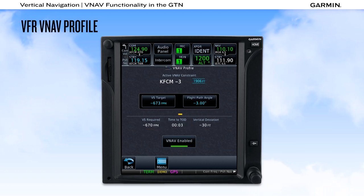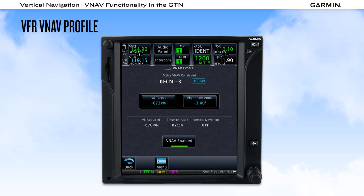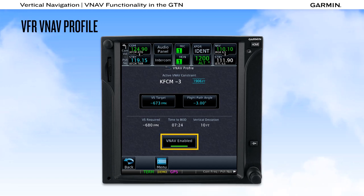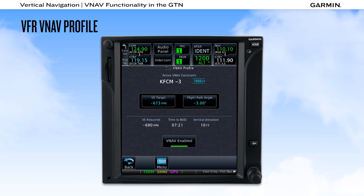The time to top of descent is indicated until the descent begins, then changes to time to bottom of descent. Note that for any of these indications to appear and for VNAV to function, the VNAV enabled button must be shown as selected on, and you must have an altitude entered into the flight plan, or these buttons will appear subdued.